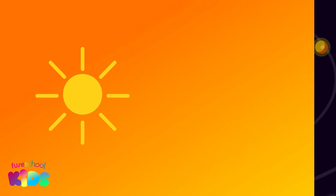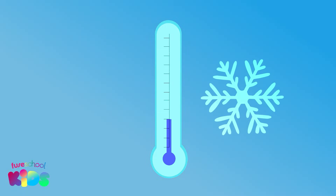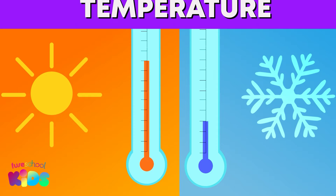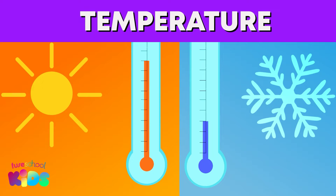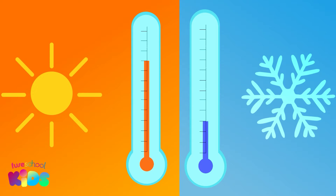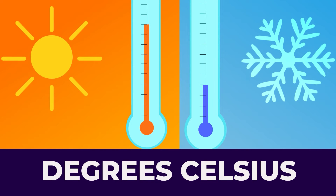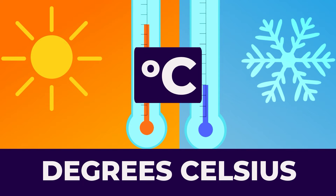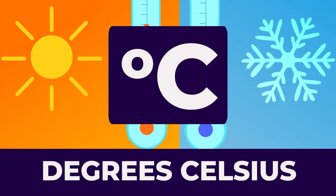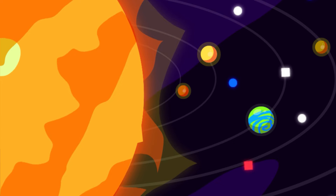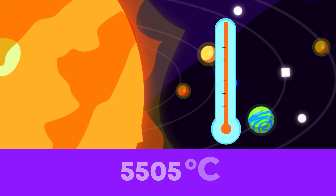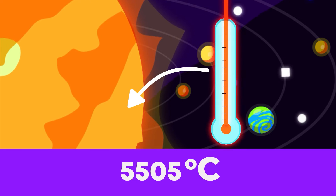Do you know what we call how hot or how cold something is? Temperature — that's correct. We measure temperature using the measuring unit of degrees Celsius. The temperature on the surface of the sun is 5,505 degrees Celsius. That's very, very hot.